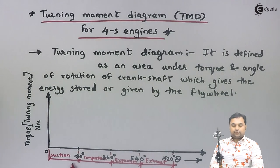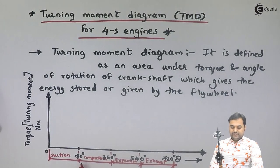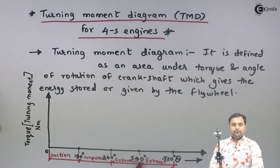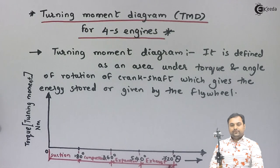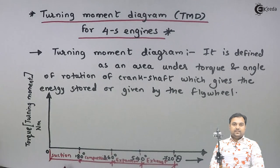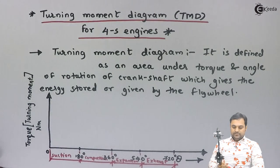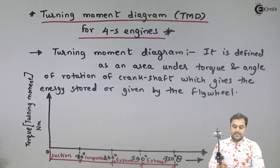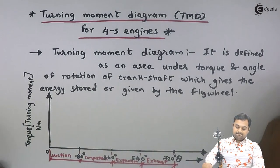From 0 to 180 degrees it is the suction stroke; from 180 to 360 degrees it is the compression stroke; 360 to 540 degrees is the expansion stroke; and 540 to 720 degrees is the exhaust stroke. Each stroke corresponds to 180 degrees of crank rotation.